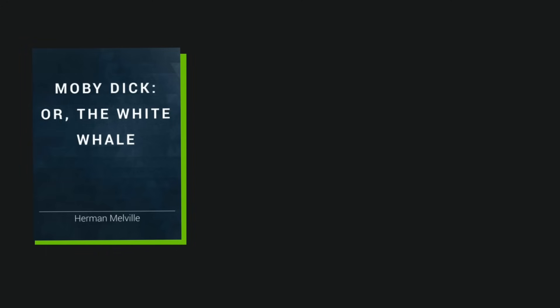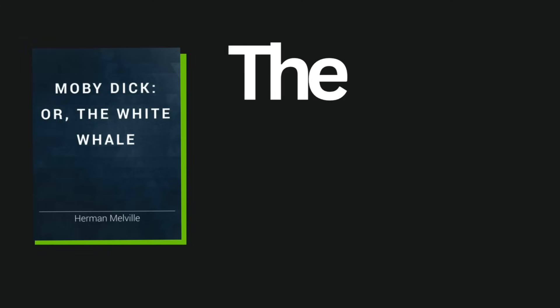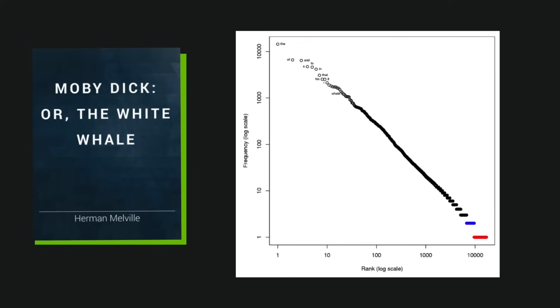Let's go back to Moby Dick. The most common word is 'the,' which is to be expected since it's also the most common word in the English language, followed by a few words that deviate from the pattern a little bit given their ubiquity in the language. After that though, it becomes almost a perfectly straight line when plotted on a log-log graph — a graph that uses logarithmic scales on both its horizontal and vertical axes. The red line at the bottom represents the amount of words that are hapax legomena, a frequency of one each.